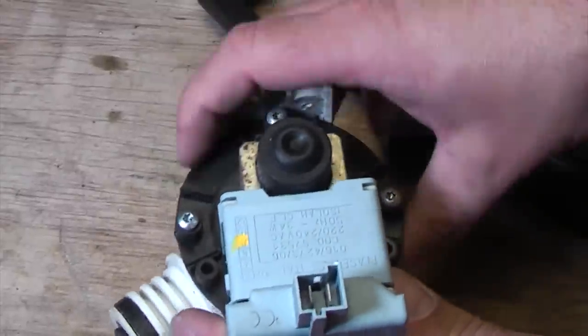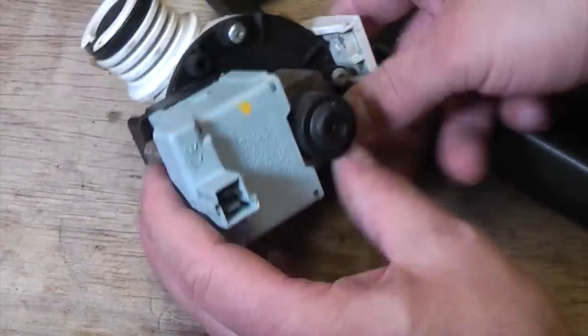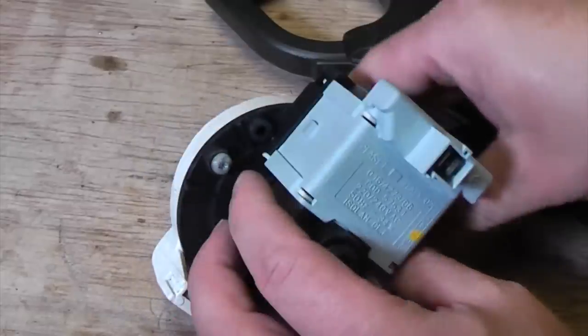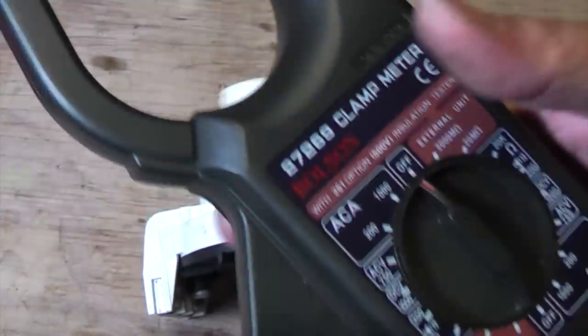What we're going to do now that we've got it on the bench is check to make sure that it's not an open circuit or anything. For that, we're going to use a multimeter.